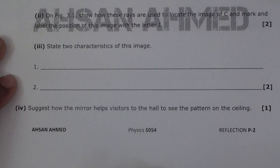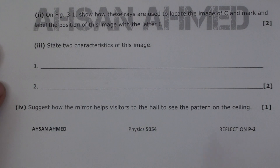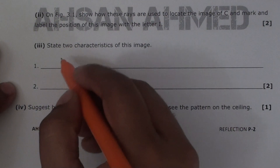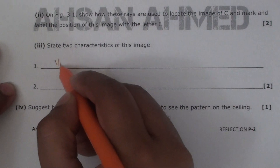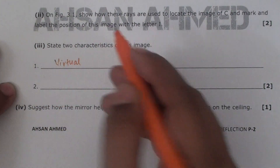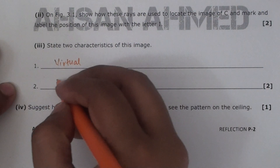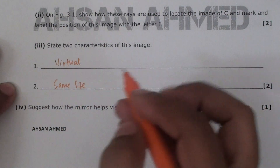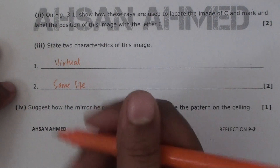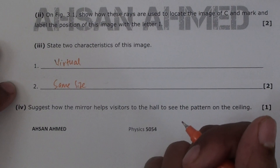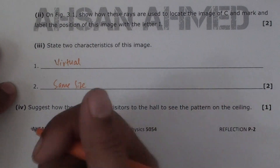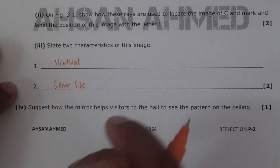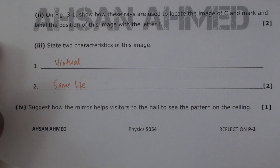The next part asks us to state two characteristics of this image. We know that this image is virtual, it is the same size as the object, it is upright, it is laterally inverted, and it is the same distance from the mirror as the object is.